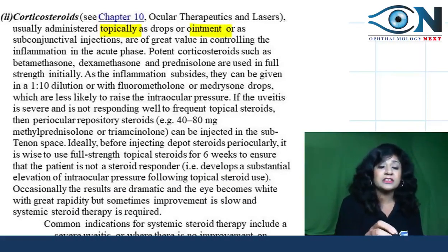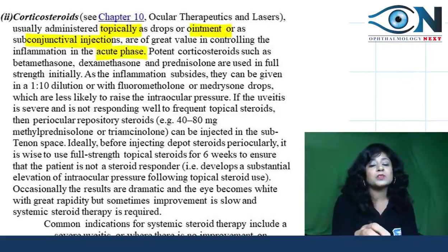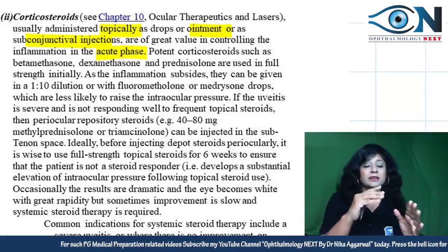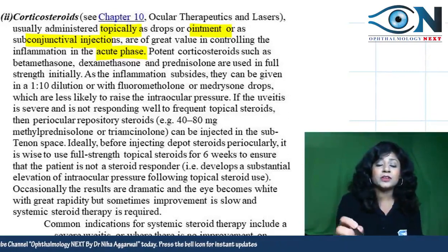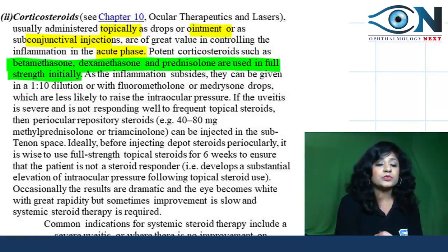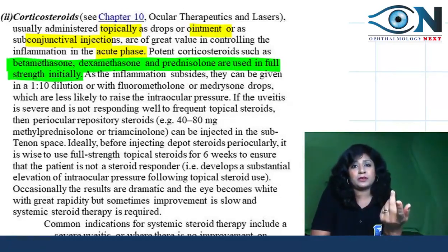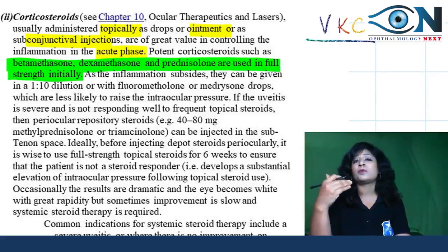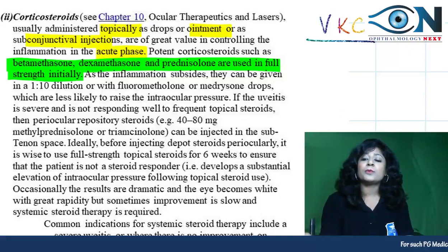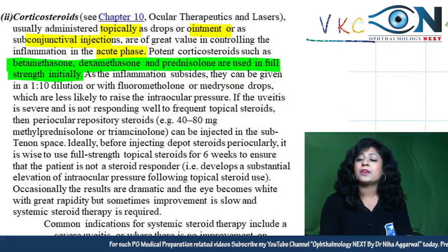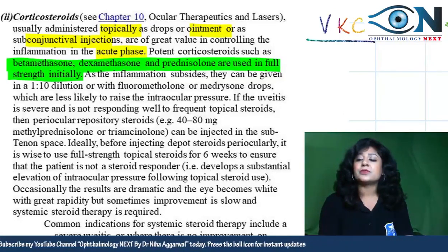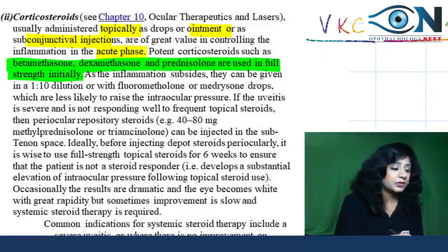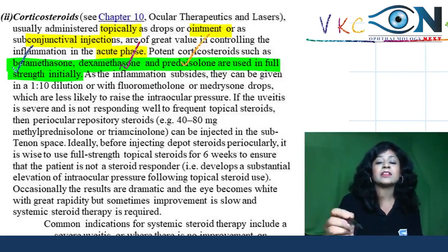Cycloplegics keep the iris and ciliary body at rest, relieve ciliary muscle spasm, diminish hyperemia, decrease vascular permeability, prevent and break posterior synechiae. Corticosteroids are given as topical drops, ointment, or subconjunctival injections in the acute phase. The preferred steroids are betamethasone, dexamethasone, and prednisolone in full strength. In less severe conditions like VKC, the weaker fluorometholone is used instead.